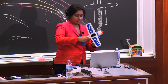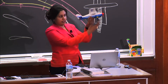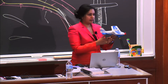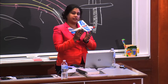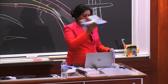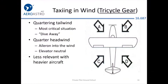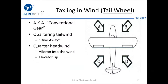A tail wheel airplane has two wheels up front and a wheel at the tail. A tricycle gear airplane has one wheel up front and two in back. For a tricycle gear airplane, if there's a quartering tailwind — wind coming from behind — you want to dive away: turn the ailerons away and push forward. If the wind is coming from the front as a headwind, go into the wind with your aileron and keep the elevator neutral. It's good to figure out which type of airplane you're training on.